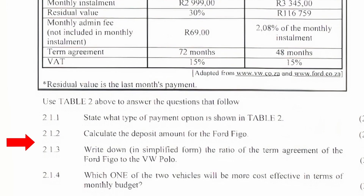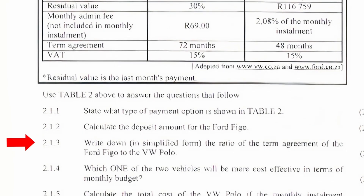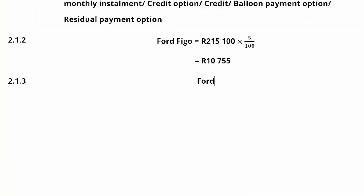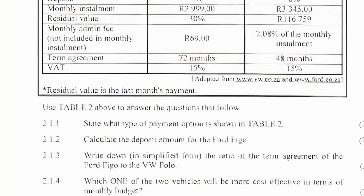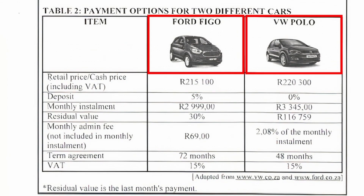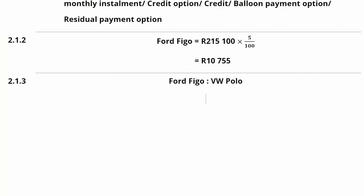Question 2.1.3: Write down in simplified form the ratio of the term agreement of the Ford Figo to the VW Polo. Since the question mentions the Ford Figo first and then the VW Polo, the ratio must be written as Ford Figo to VW Polo. From the table, the term agreements are 72 months for the Ford Figo and 48 months for the VW Polo, giving us the ratio 72:48.